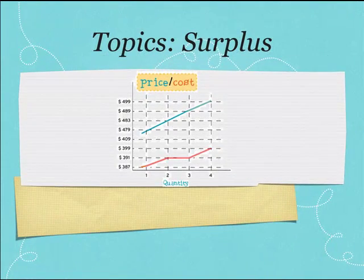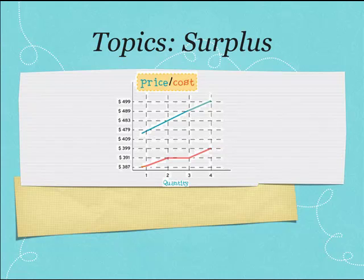Lesson 2.08 on consumer and producer surplus can be confusing. The difference between the blue and red lines is the surplus. Once you figure that out, you should sail through this lesson.